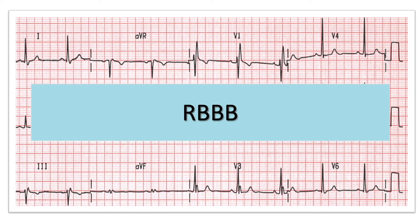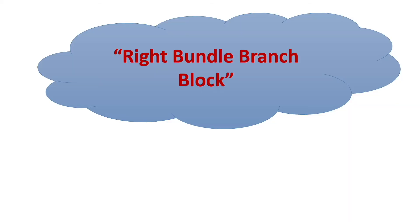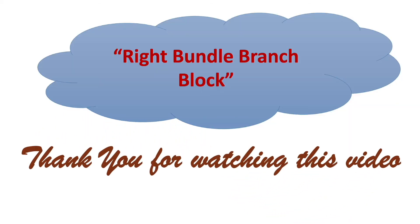I would like to add one more important point: if an ECG fulfills all the criteria of right bundle branch block except that QRS duration is less than 120 milliseconds, then it is called incomplete right bundle branch block. This was a simple method to identify whether an ECG shows right bundle branch block or not. Thank you for watching this video.